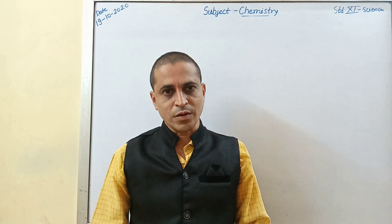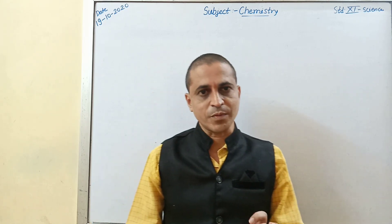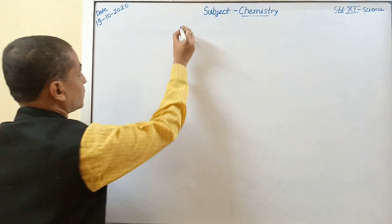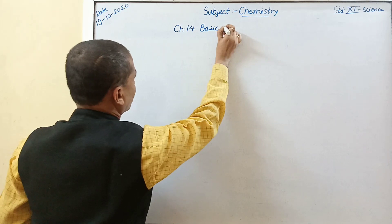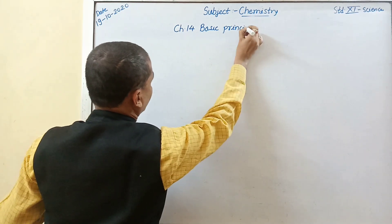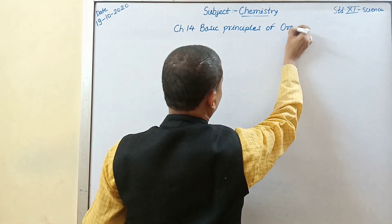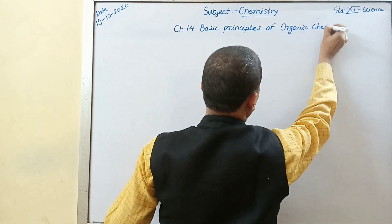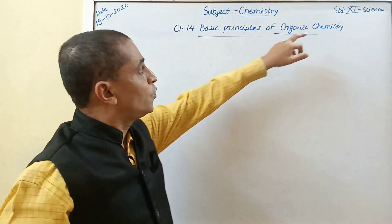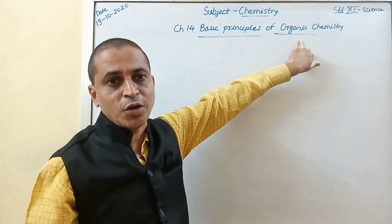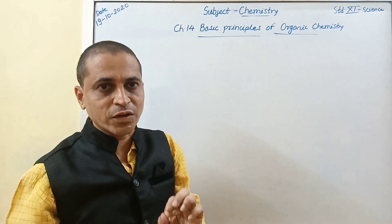So let us start a very interesting chapter — that is basic principles of organic chemistry, chapter number 14. We have already studied about carbon, and carbon shows a unique property of catenation. Catenation means the property of direct bonding between atoms of the same element to form a chain, and that property is called catenation.